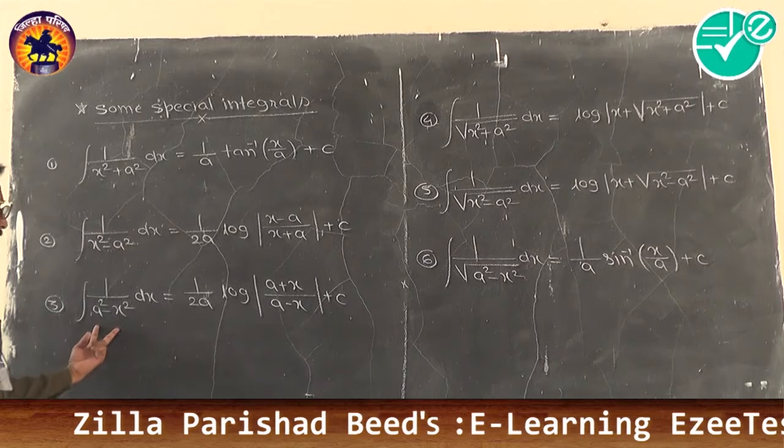Now for the three integrals with square roots: when the coefficient of x² is positive, the answer is written as log(x + √(…)) + c. When the integrand contains a square root with x² coefficient negative, the answer is in the form 1/a · sin⁻¹(x/a). So: x² coefficient positive → log form; x² coefficient negative → sin⁻¹ form. Without square root: 1/a or 1/(2a) format; with square root: log or 1/a · sin⁻¹(x/a).